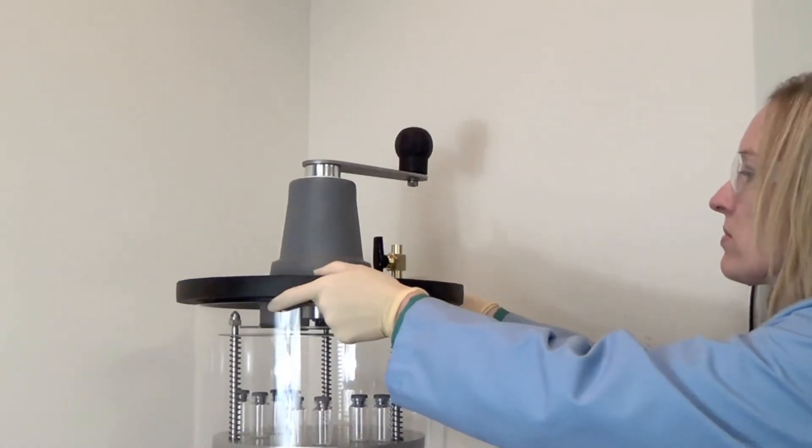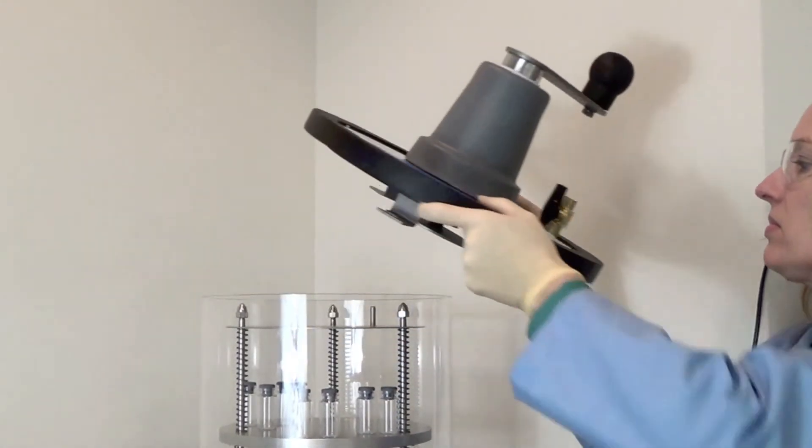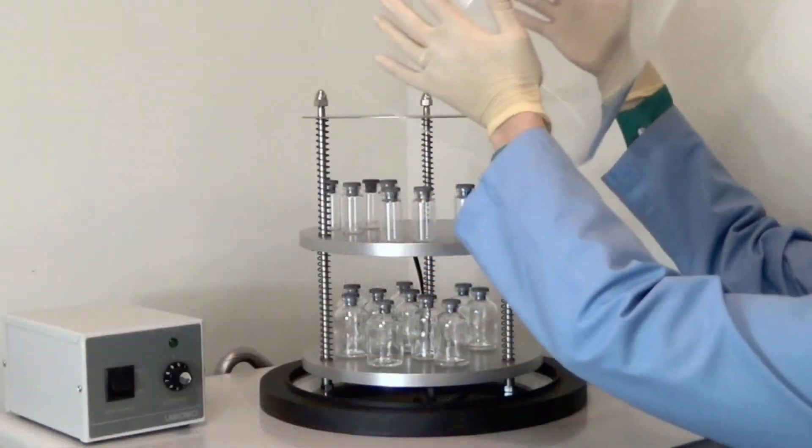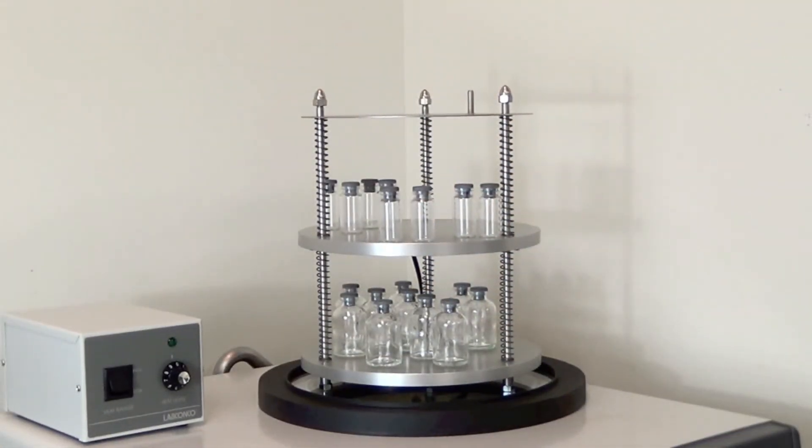Turn off the vacuum pump. Rotate the stoppering assembly counter-clockwise to remove it. Remove the clear chamber to gain access to your stoppered lyophilized samples.